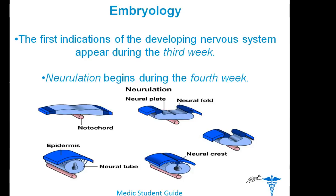Let's start with a bit of embryology. How is our nervous system developed? The first indications of nervous system development appear during the third week as the neural plate and neural groove develop on the posterior aspect of the trilaminar embryo.